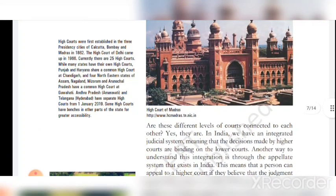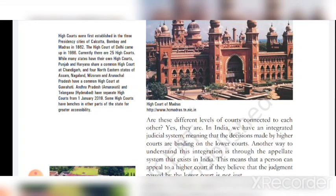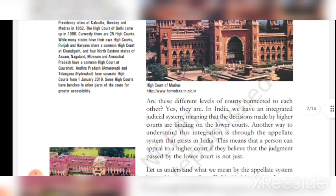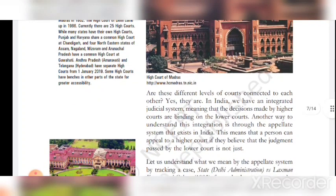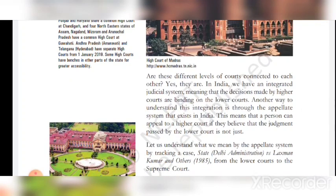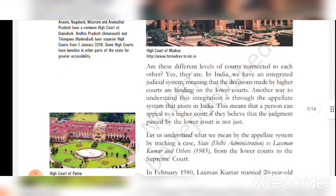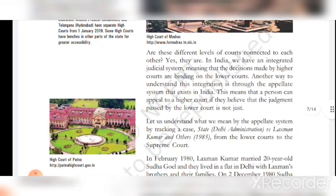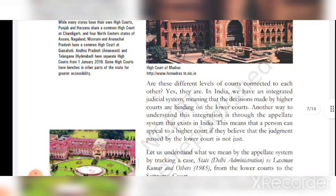High Courts were first established in the year in the presidency cities of Kolkata, Bombay, and Madras in 1862. The High Court of Delhi came in 1966. Currently, there are 25 High Courts; while many states have their own High Courts, Punjab and Haryana share a common High Court at Chandigarh. And four north-eastern states of Assam, Nagaland, Mizoram, and Arunachal Pradesh share a common High Court at Gauhati. Andhra Pradesh (Amaravati) and Telangana (Hyderabad) have separate High Courts from 1 January 2019. Some High Courts have benches in other parts of the state for greater accessibility.